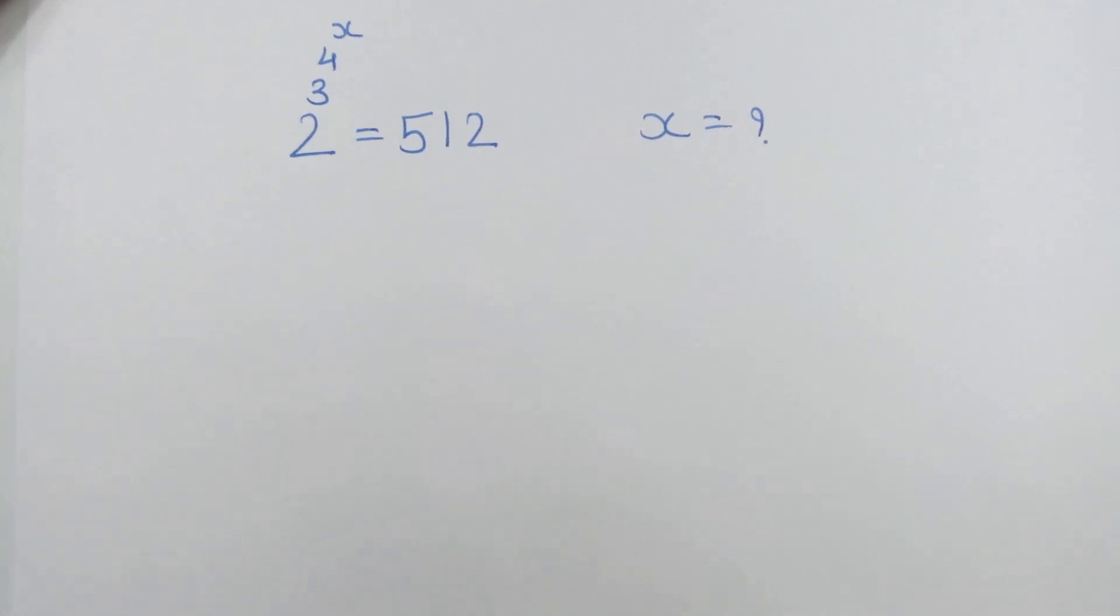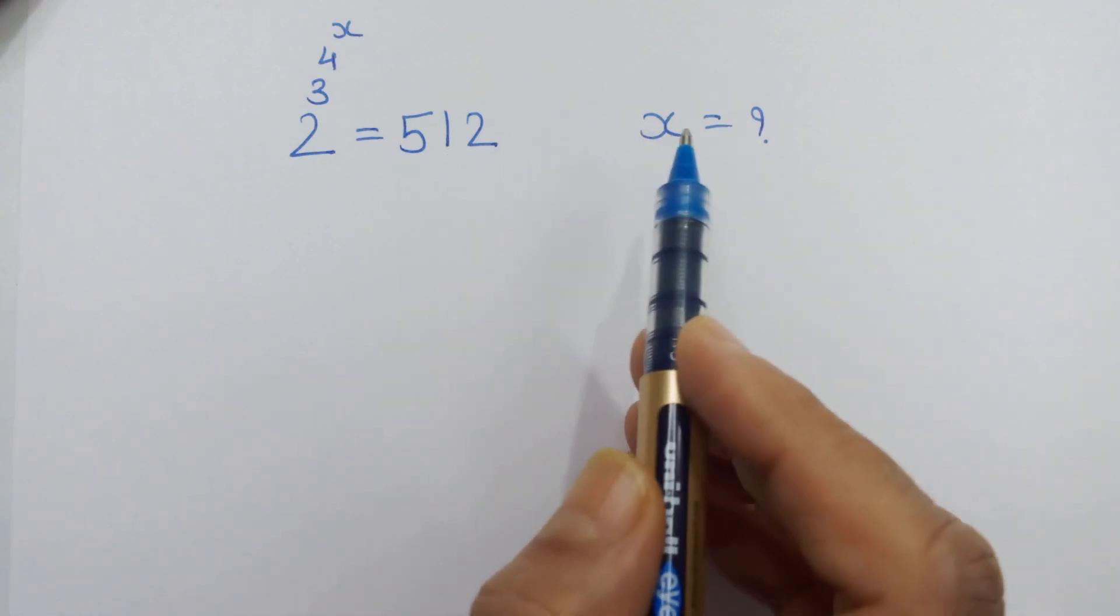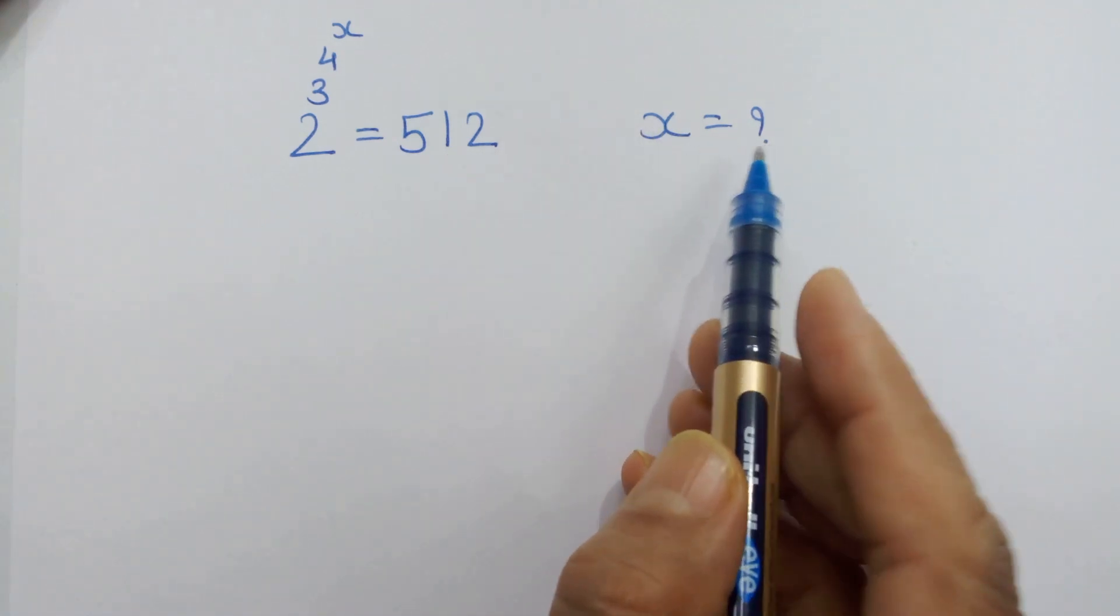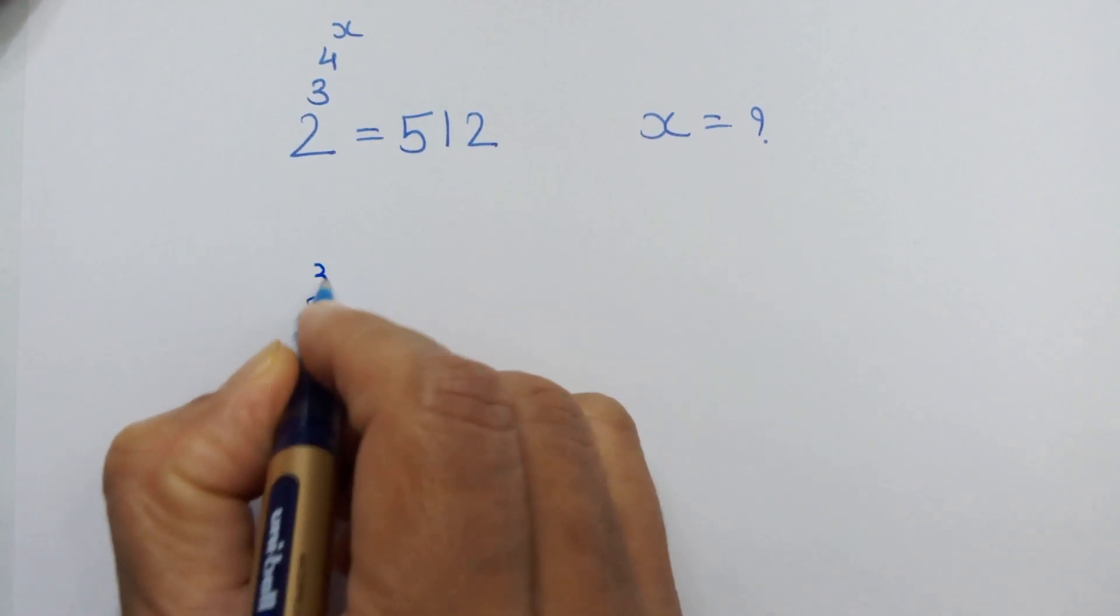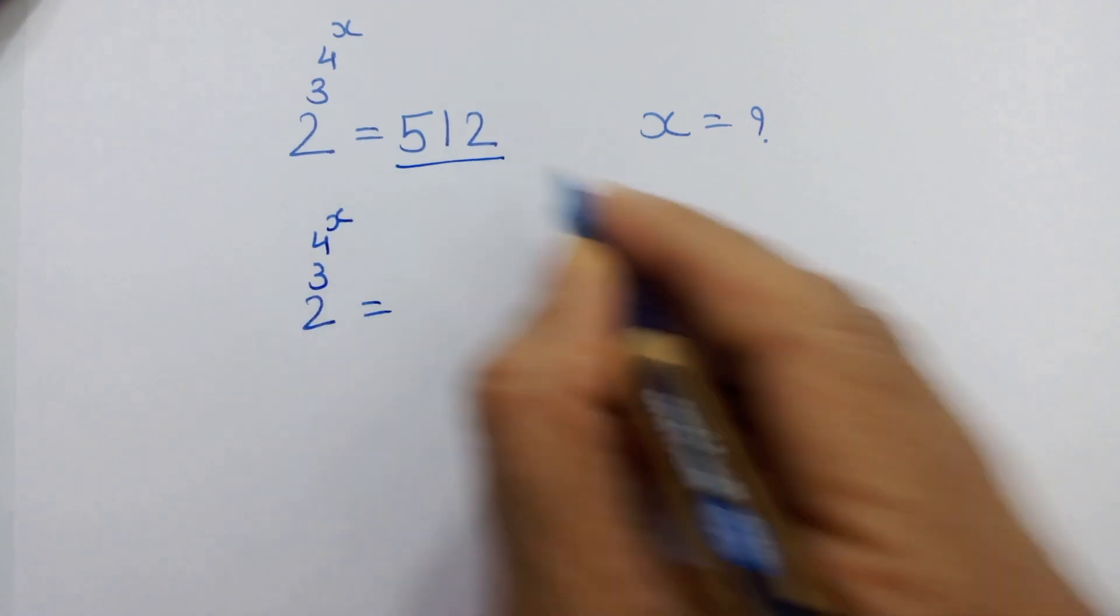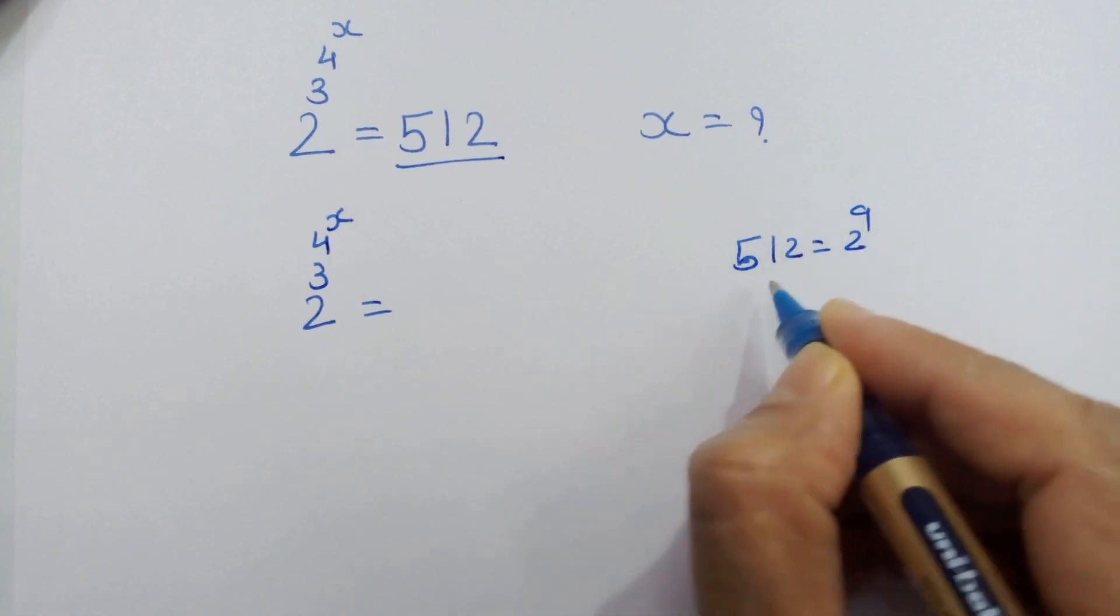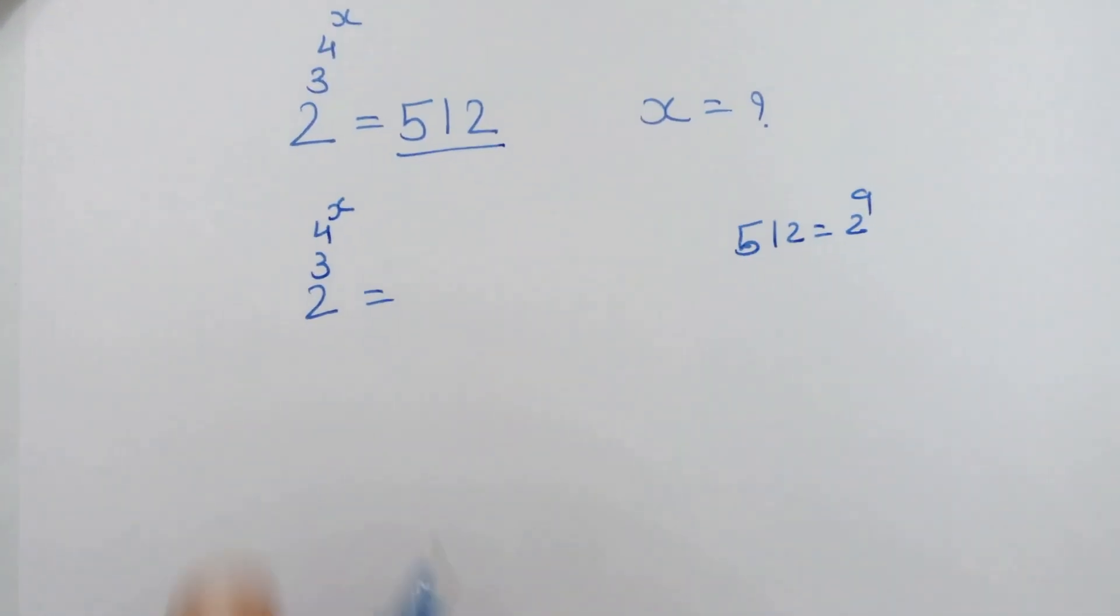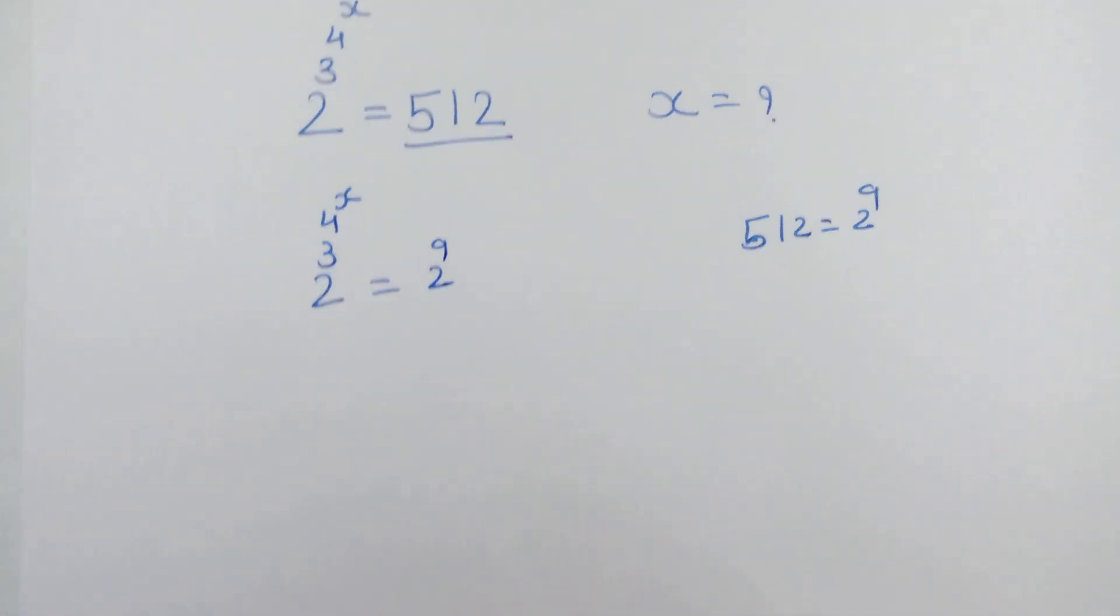Hey guys, how are you all? Here we have a very nice exponential equation and we need to find the value of x. Let's just start now. 2 raised to 3 raised to 4 raised to x is equal to 512, which is equal to 2 raised to 9. So we write 2 raised to 9 instead of 512.